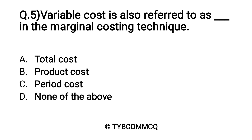Question number five: Variable cost is also referred to as dash dash in the marginal costing technique. Option A: total cost, Option B: product cost, Option C: period cost, Option D: none of the above. Yes, Option B — product cost — is the correct answer.